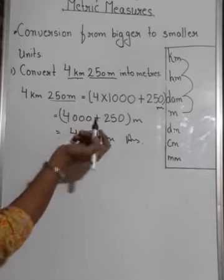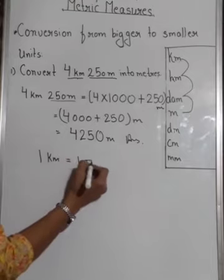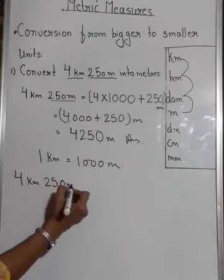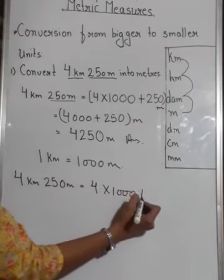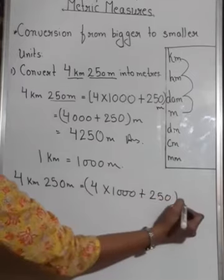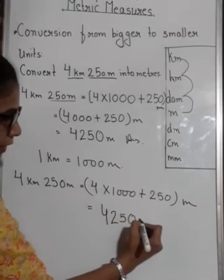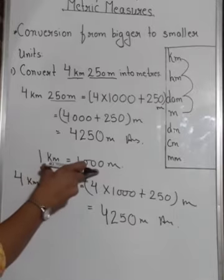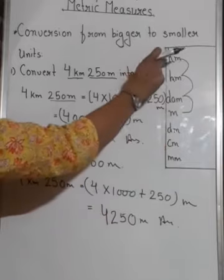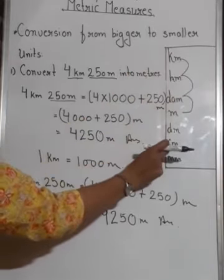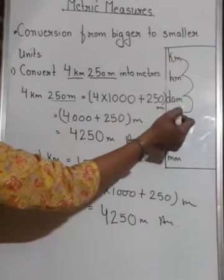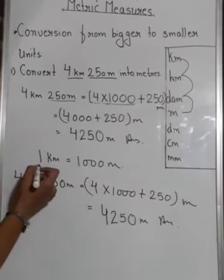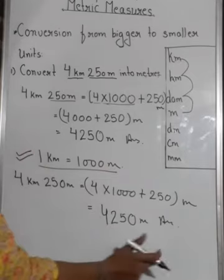You can also solve it using the direct relationship: 1 kilometer equals 1000 meters. So 4 km 250 m = (4 × 1000) + 250 = 4250 meters. Both methods are correct. If you can learn the relationships, that is very good, but if not, you can write down the table — kilometer, hectometer, decameter, meter, decimeter, centimeter, millimeter — and count the steps. Three steps from kilometer to meter means multiply by 1000.